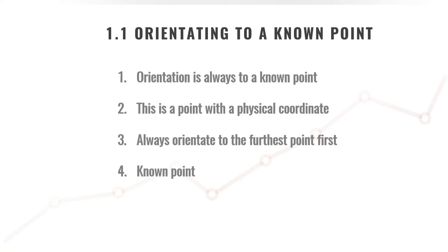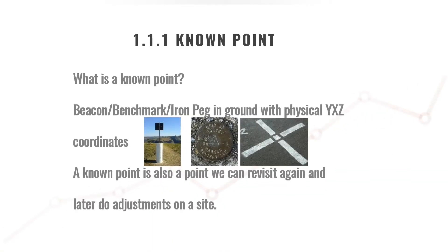Now that we have a better understanding of what orientation is, let's go into a bit more detail about the known point. So what is a known point? It's a benchmark or a beacon, an iron peg, or any physical point. It can be a nail in the ground with X, Y, Z or lat/long and height coordinates. But a known point does not necessarily have to have known coordinates from the start when you work with a total station. You can orientate to a point and only later come back to measure those points and do a shift on those points to the correct geographical location of those control points. It can be a local survey, and at a later stage you can orientate those existing points to either cadastral or benchmarks or beacons.